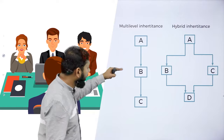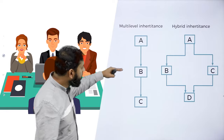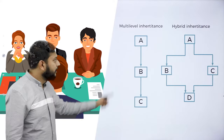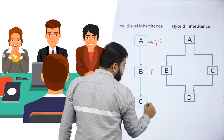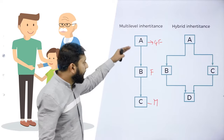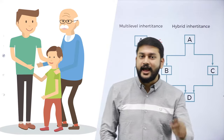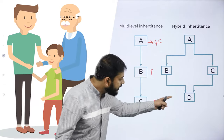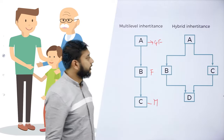The next type is multi-level inheritance. Multi-level means more than one level. For example: grandfather, father, and myself — three levels. If I have more than one level, such type of inheritance is called multi-level inheritance.